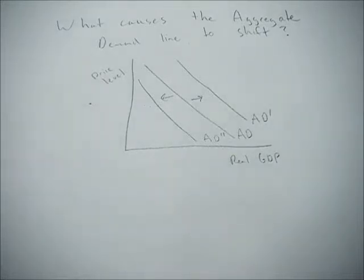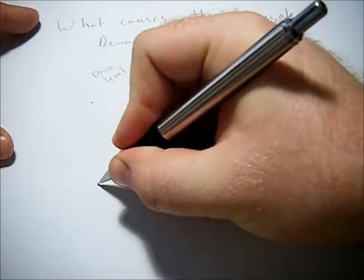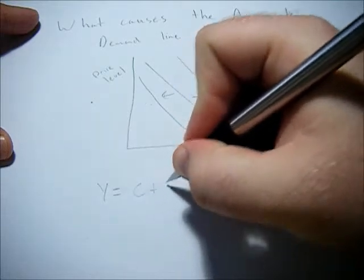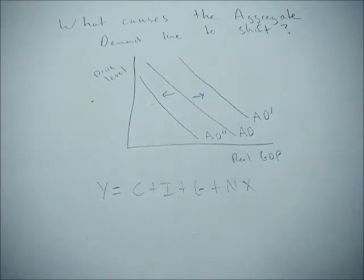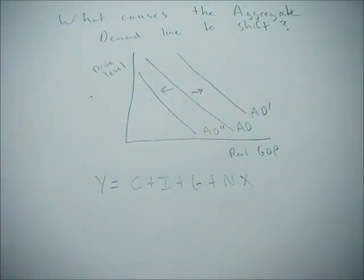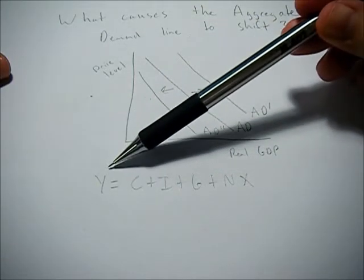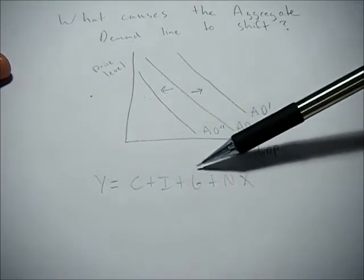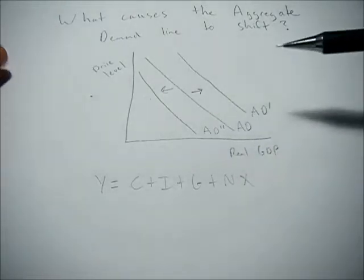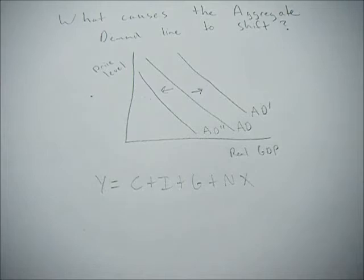The easiest way I can get this across is to remember your equation for GDP, and those are the components of aggregate demand or the determinants of aggregate demand. Y equals C plus I plus G plus NX. Y is GDP, C is consumer spending, I is investment spending, G is government spending, and NX is net imports, so exports minus imports.